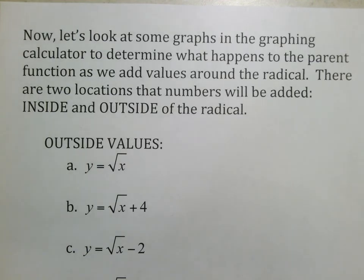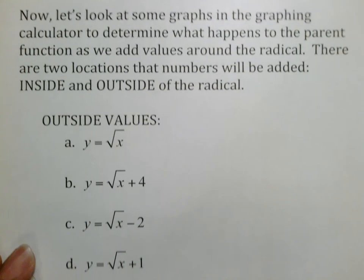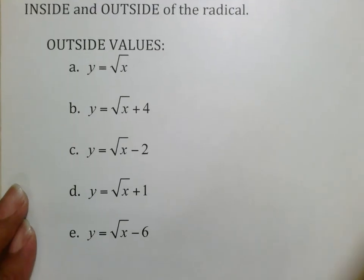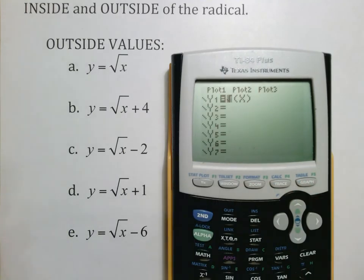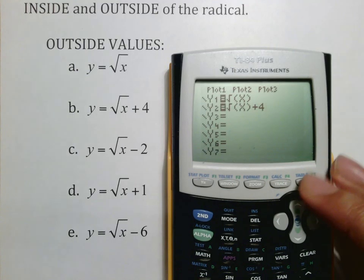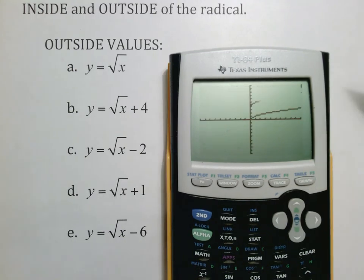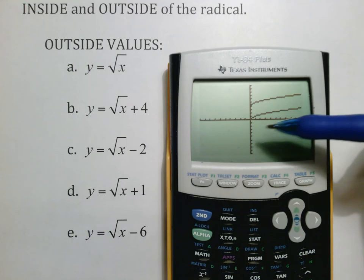Whenever I add some numbers around the radical, there are two locations where numbers are going to be added—that's inside and outside of the radical. You already saw your y equals square root of x. I'm going to add to that graph y equals square root of x plus four, and pay attention to how this graph moves. It will have the same exact shape, it's just going to move. It has the same shape but this moved up four.